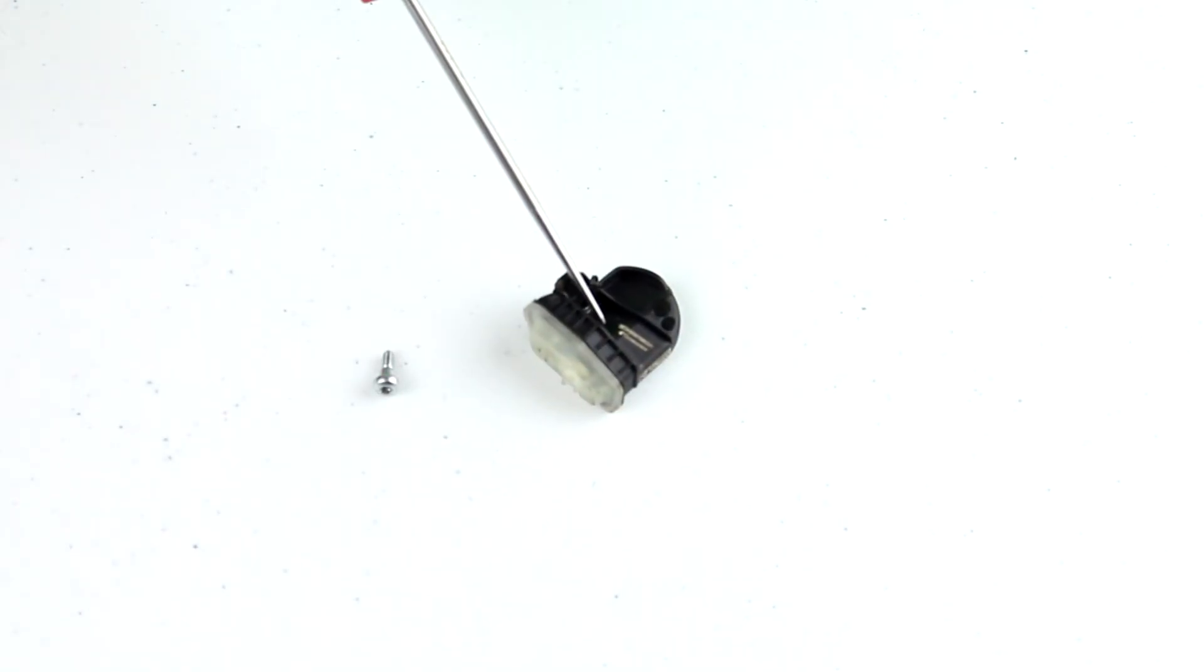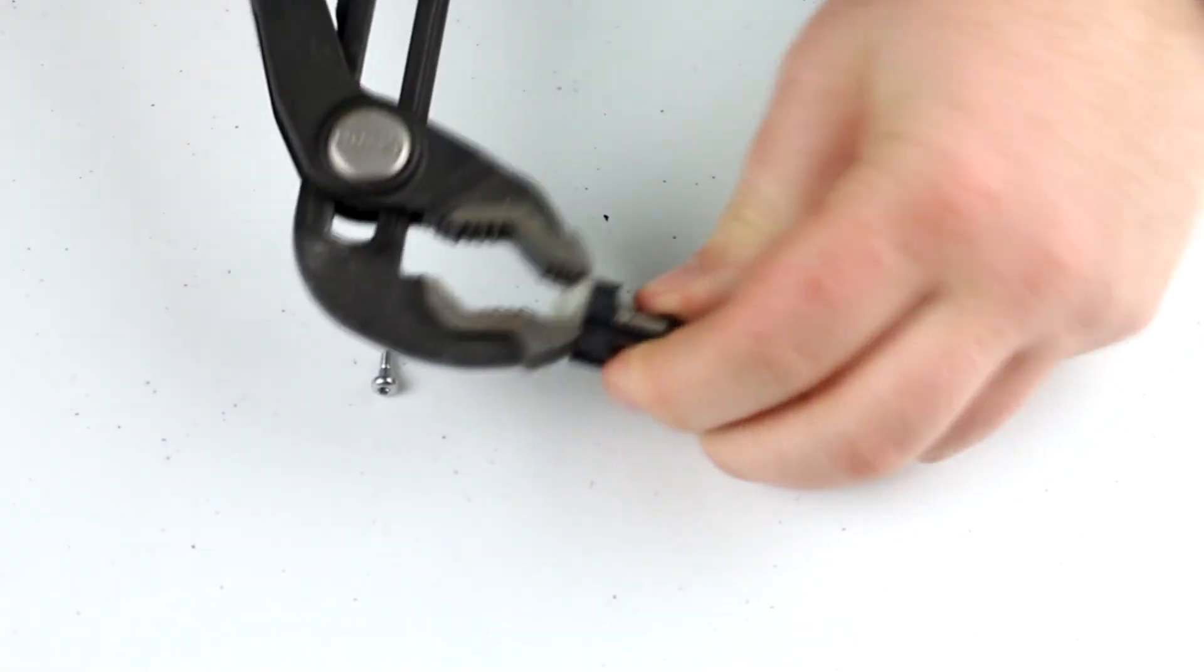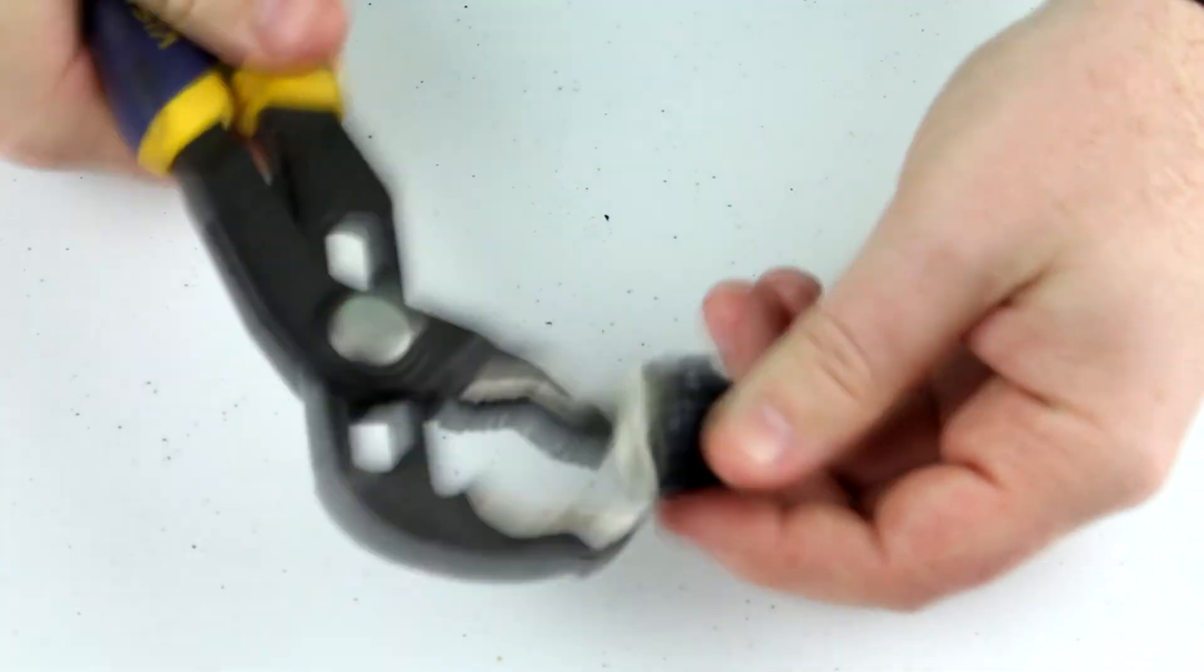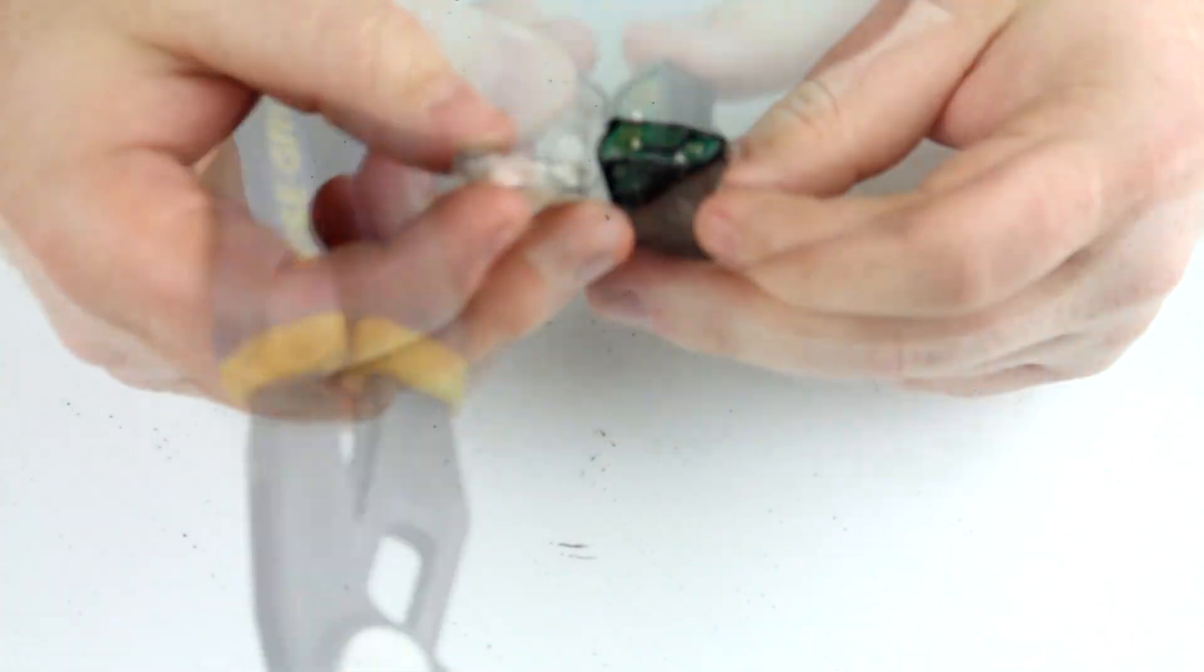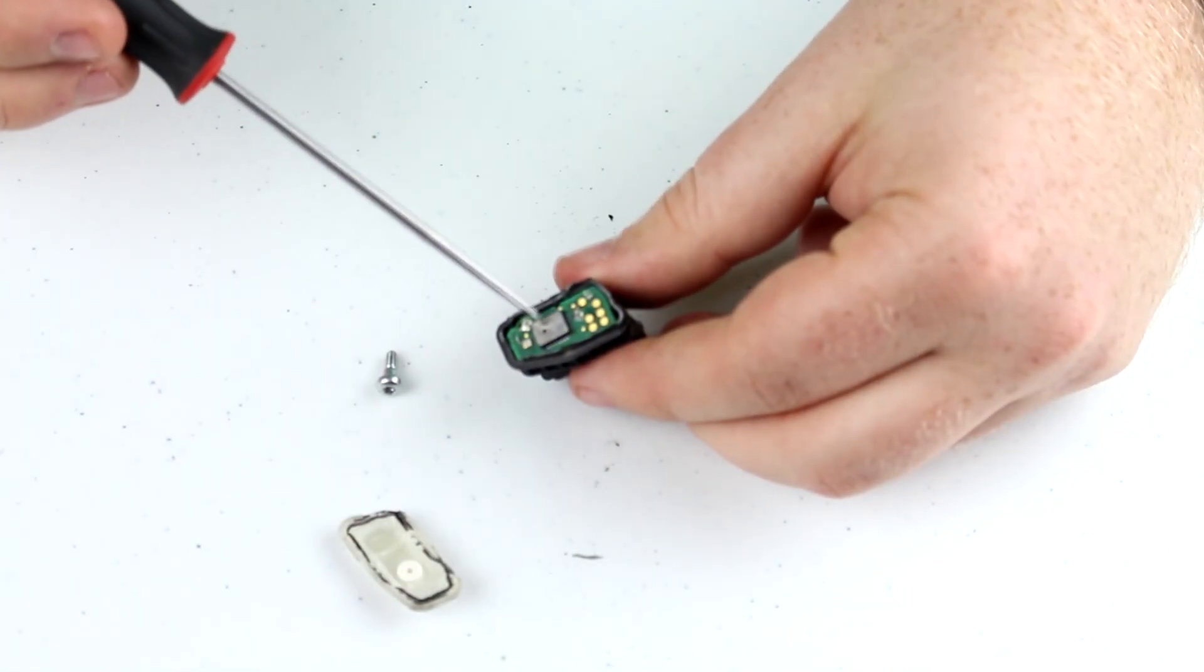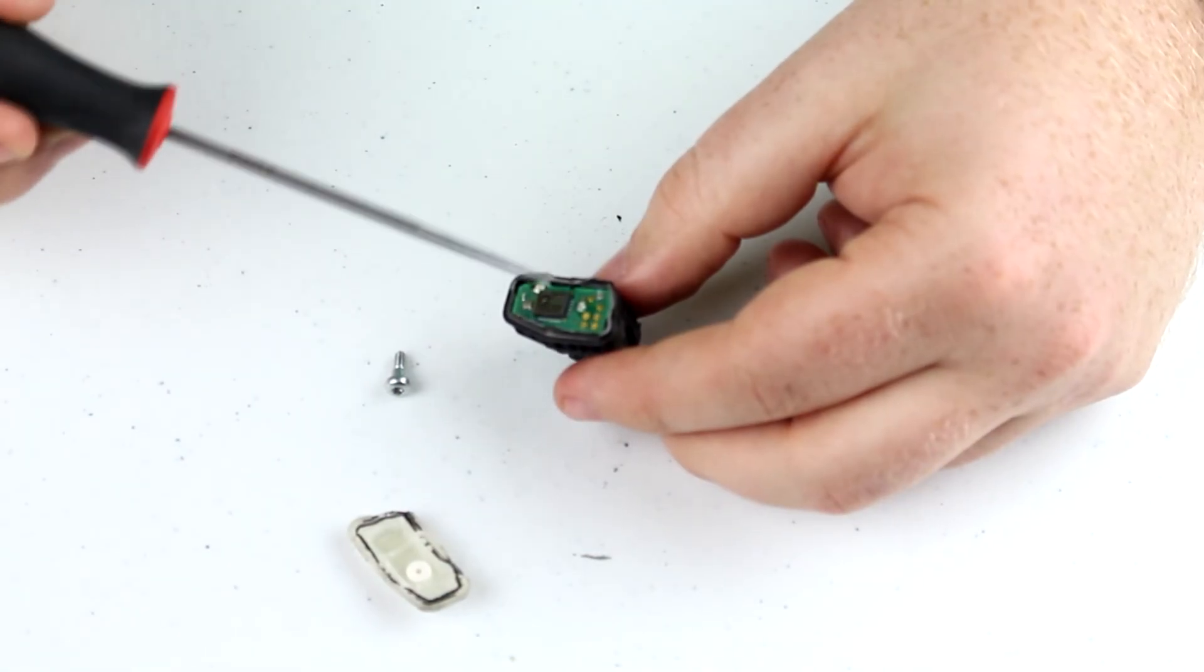There aren't any screws that hold this case together so I'm going to have to break it apart. Interesting, it looks like these are melted together. All right, the actual assembly sensor is on a microchip. I'm going to see if I can get this chipboard off.